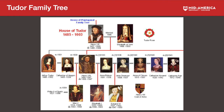Henry the Seventh is married to Elizabeth of York, and they have children including Arthur Tudor and Henry the Eighth, along with others off to the right of the screen that we're not focused on.